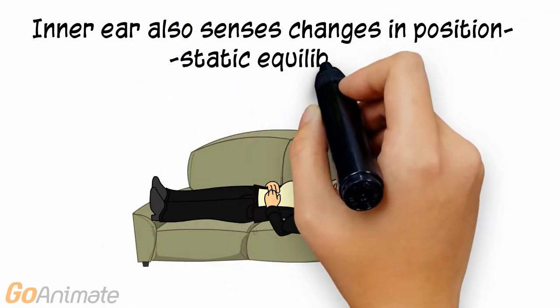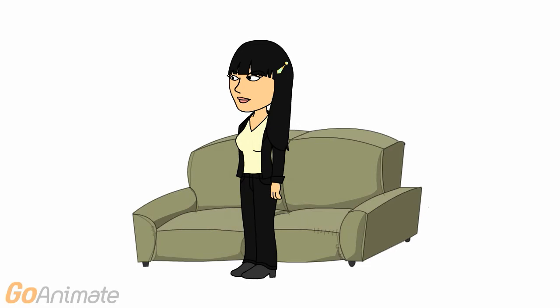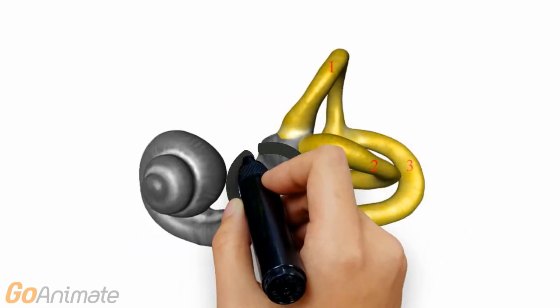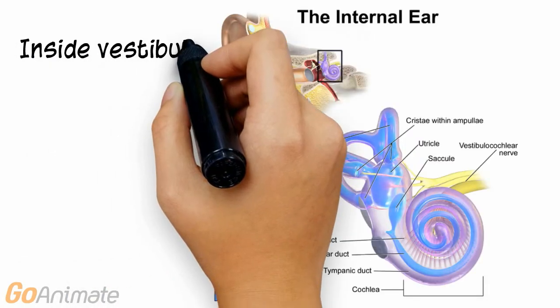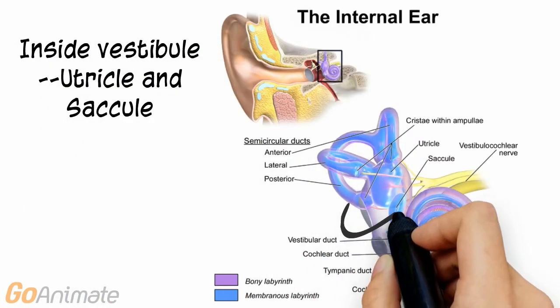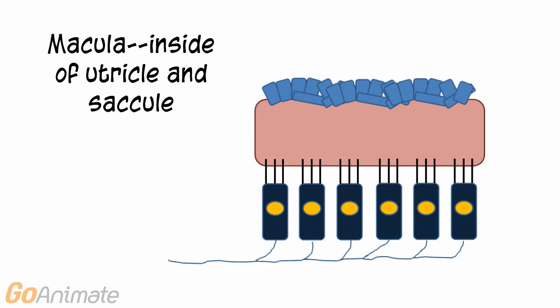The brain interprets these impulses as hearing. The inner ear also senses changes in position, known as static equilibrium. Static equilibrium is sensed in the vestibule. Inside of the vestibule are two areas called the utricle and saccule.